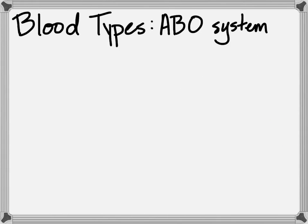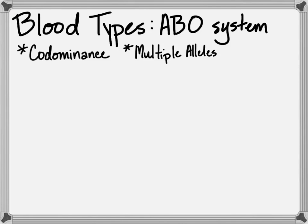Blood type is another classic example of codominance. It's also influenced by a number of genes if you're thinking about A positive or A negative, but we're just going to focus on the A, B, and O system. So we're looking at codominance, and we've also got multiple alleles at play here: one dominant A allele, one dominant B allele, and a recessive allele that gives you O blood type when it's homozygous recessive.